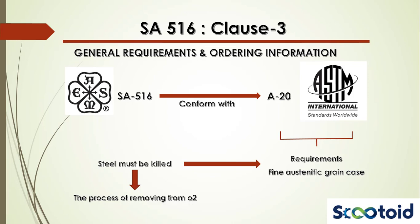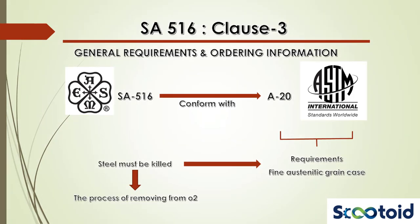The A20 includes procedures for testing and retesting, permissible variations in dimensions and mass, quality and repair of defects, marking, loading, etc. Once you start using Section 2 regularly, you'll notice that specifications in this section often refer to some other general specification elsewhere where general requirements are outlined.